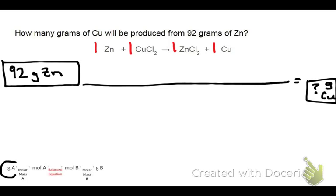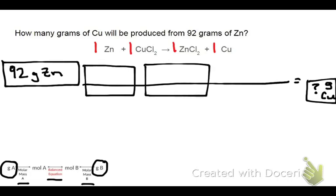Now looking at my plan of attack down here, looks like I'm going from grams of zinc all the way into grams of copper. So it looks like that's going to take one, two, three steps to get there. All right. So let's go ahead and give myself a couple of boxes to work with here.